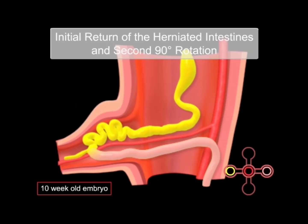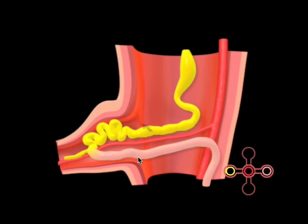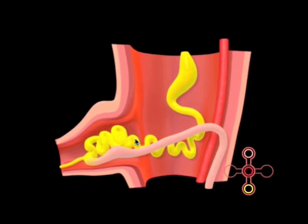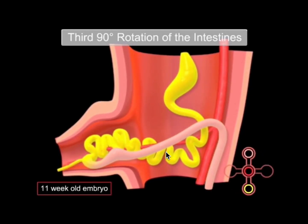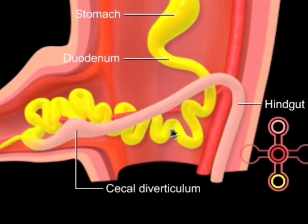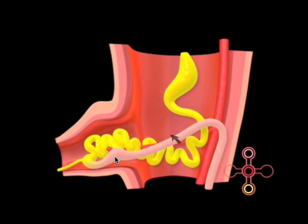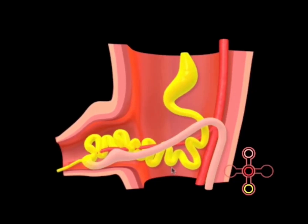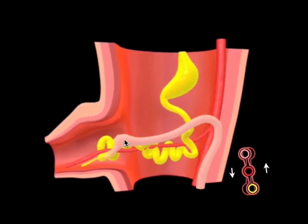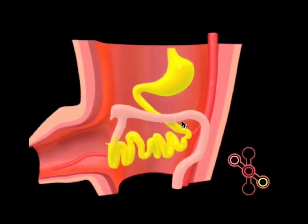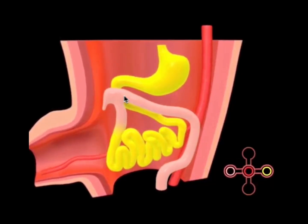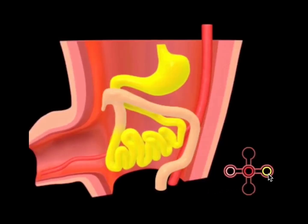To resolve the umbilical herniation, the abdominal cavity grows large enough to allow the midgut to herniate back in at around week 10, which is also when the vitelline duct obliterates. Reduction of the midgut hernia starts with the cranial limb returning first with another 90-degree counterclockwise rotation, passing under the caudal limb and the SMA. With a final 90-degree counterclockwise rotation by week 11, the caudal limb is last to return, passing in front of the cranial limb. In total, the midgut rotates 270 degrees counterclockwise in three stages.